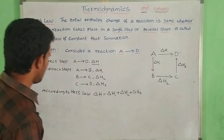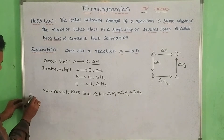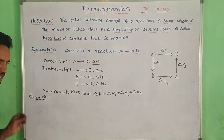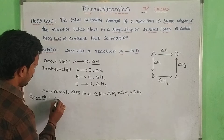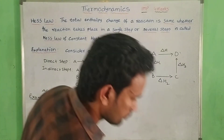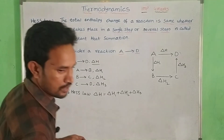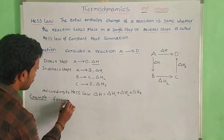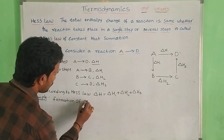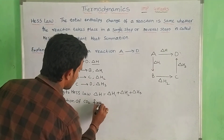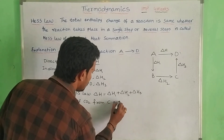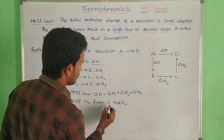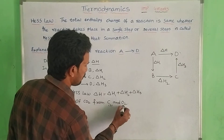So example: formation of CO2. Formation of CO2 from C and O2 — carbon and oxygen — carbon in solid state and oxygen in gas state.